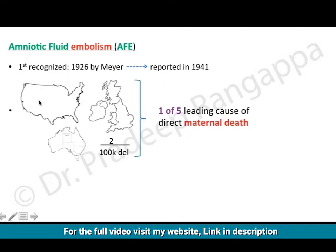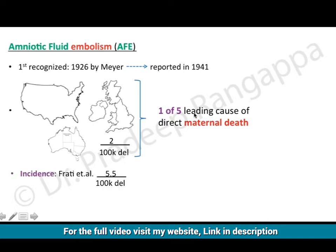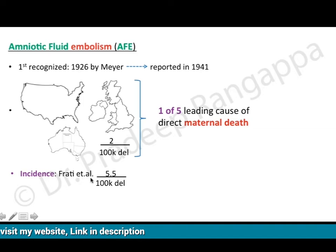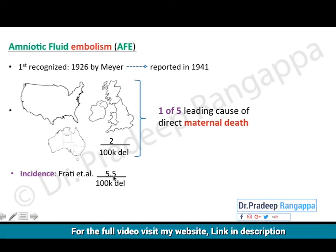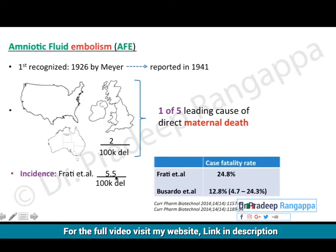Data from Western countries — mainly the UK, Australia, and USA — shows the occurrence rate is 2 per 100,000 deliveries, and it is one of the five leading causes of direct maternal death. Another study by Frati et al. noted an occurrence rate of 5.5 per 100,000 deliveries.